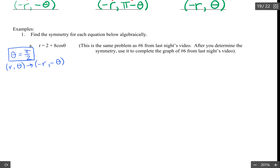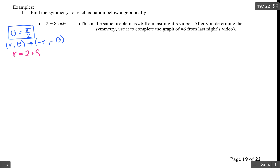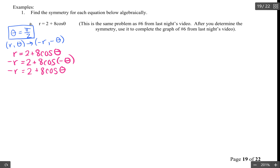Testing r comma theta becoming negative r comma negative theta: I plug negative r and negative theta into the original equation r equals 2 plus 8 cosine theta. When I make r become negative r and theta become negative theta, I ask: do I get the same original equation? We know from even-odd functions that 8 cosine of negative theta equals 8 cosine theta, but the left side becomes negative r. So no, it's not true — that test does not work.